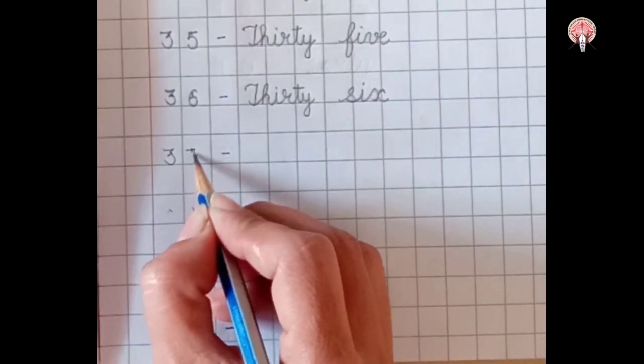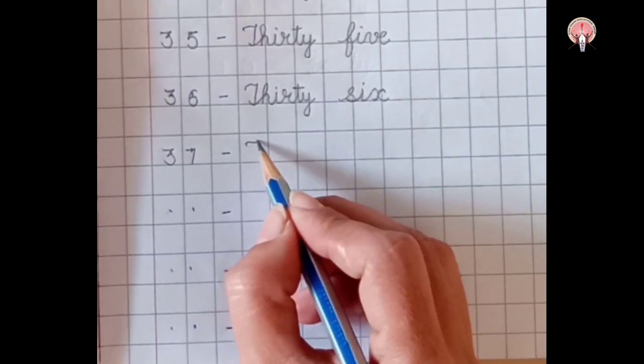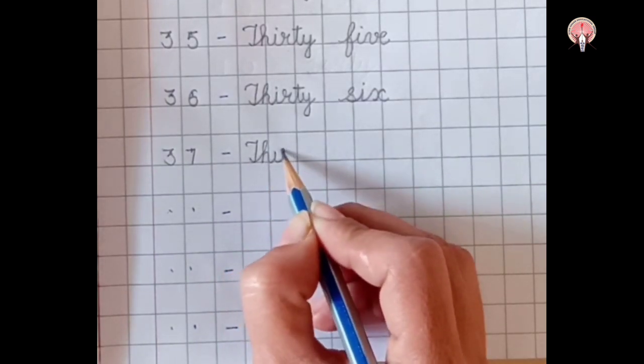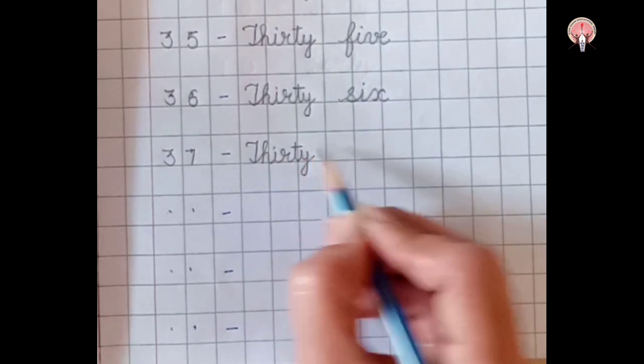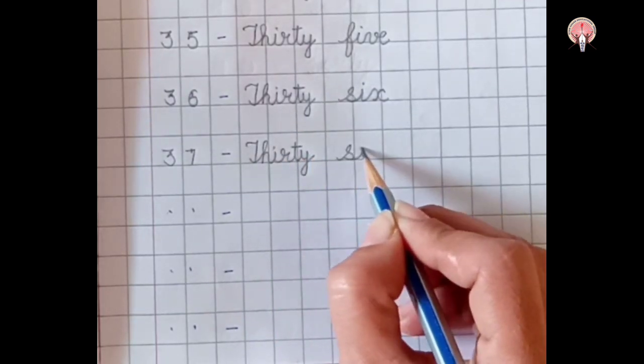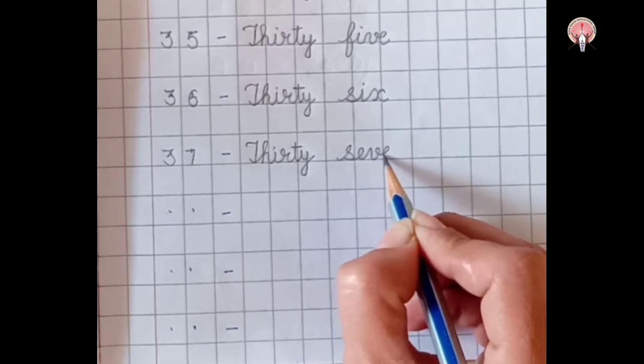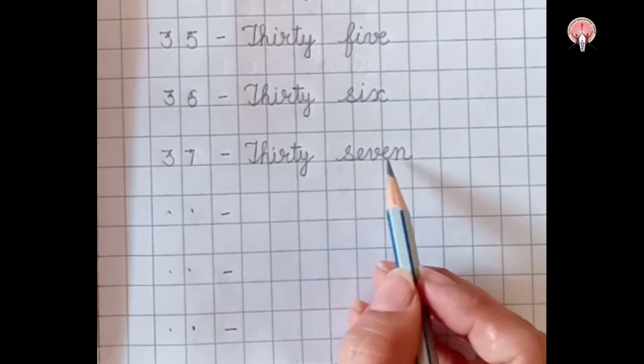3, 7, 37. Thirty, T-H-I-R-T-Y, 30. Seven, S-E-V-E-N, 7. 37.